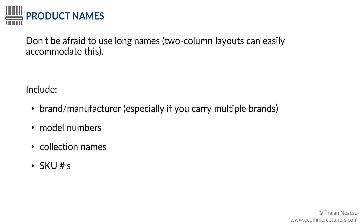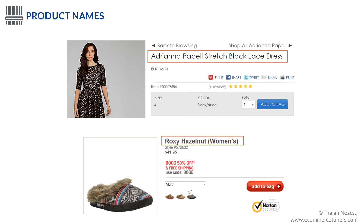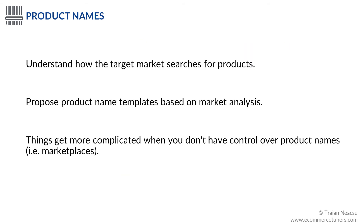Don't be afraid to create long product names that contain more than just the product name — two-column PDP layouts can easily accommodate this. Include the brand or the manufacturer associated with the product, especially if you sell products from multiple brands. Also include model numbers, collection names, SKU numbers, or other important product attributes. On this dress PDP, the product name includes the brand, the fabric, and the color, which is great for users and search engines as well. On the other side, the product name in the second example doesn't even include the category the product belongs to — slippers. It may be obvious to users that they are looking at slippers, but not having "slippers" in the product name is not good for search engines.